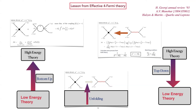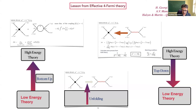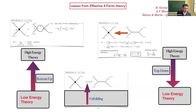Any higher-order correction in any theory will have cut-off dependence unless renormalized. There is a notion of renormalizing the effective field theory, which is slightly different from renormalizing normal quantum field theory — it has to be done order by order. For dimension-six operators, you can renormalize and calculate the beta function, but this generates dimension-eight operators, which you ignore as long as you restrict yourself to dimension six.